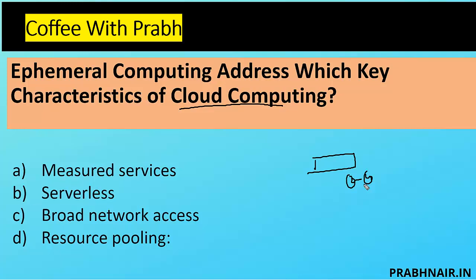The question asks which key characteristic of cloud computing ephemeral computing addresses. There are five characteristics: on-demand, broad network, resource pooling, and others. Option A is metered services — this makes sense because metered services give visibility about how much we've utilized, so we can manage the instance accordingly. Option B is serverless — serverless is not a characteristic, it's a technology. Option C is broad network access — you can access your service from anywhere, but that doesn't connect with ephemeral computing.